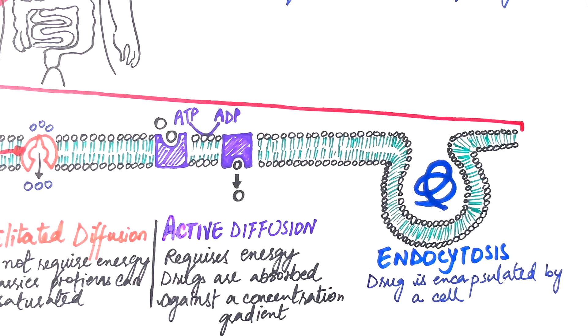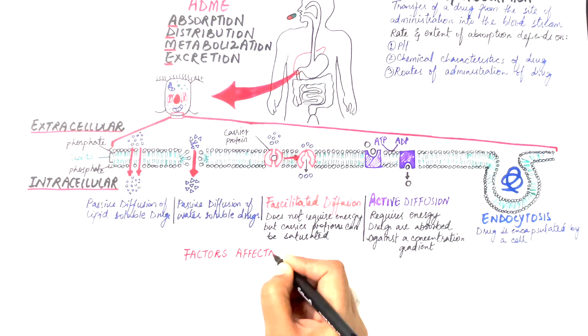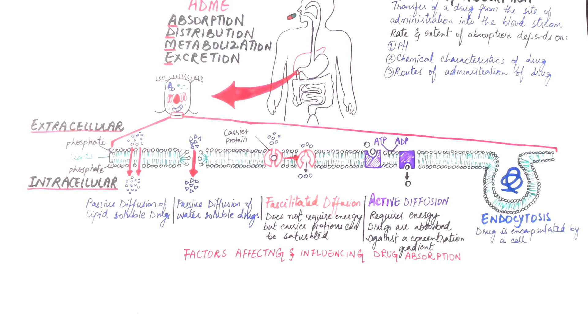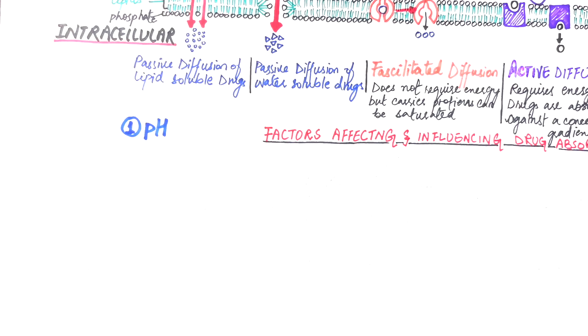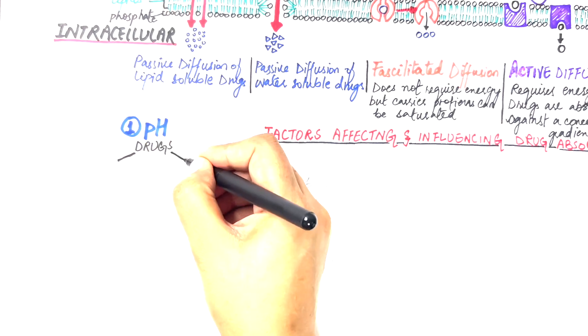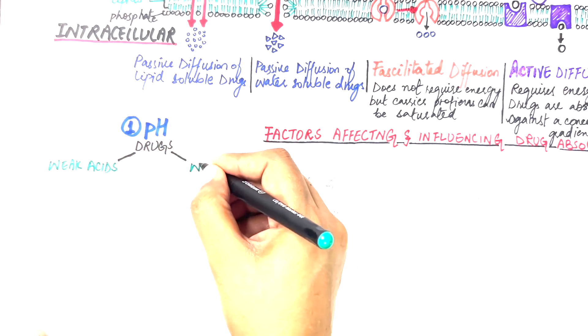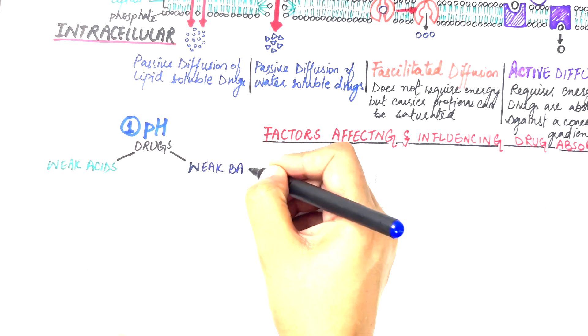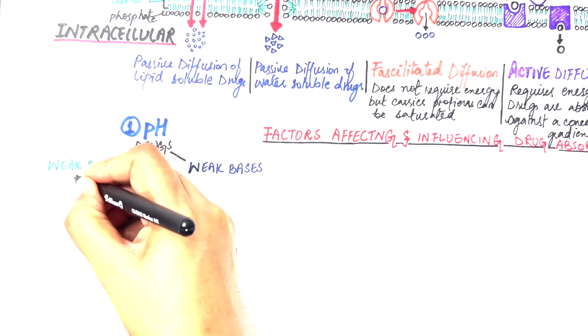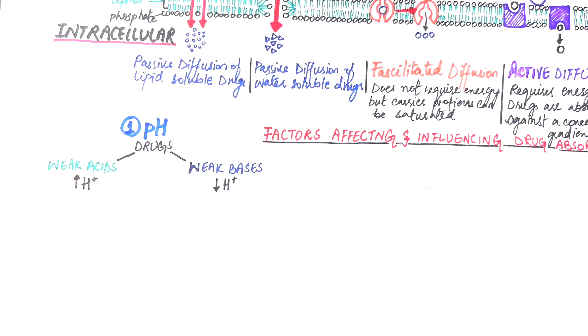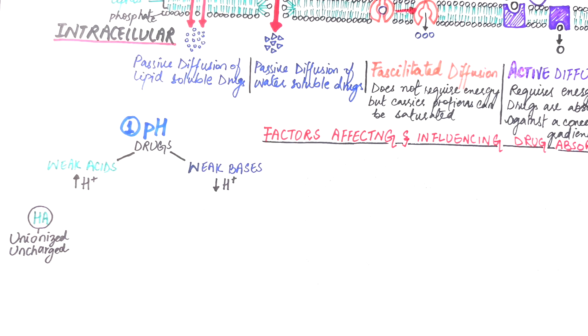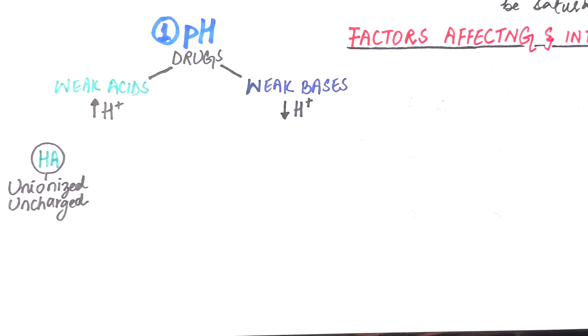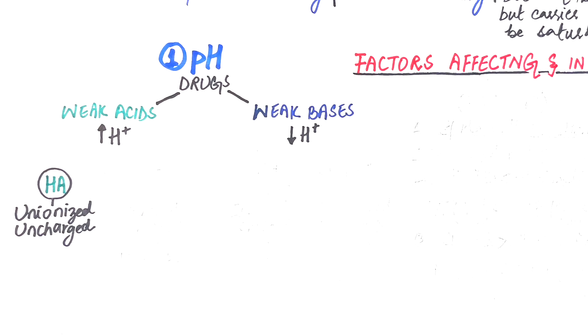Let's now look into some really important factors that can affect and influence drug absorption. The first factor which we will look into is the pH. Drugs are either in weak acids or in weak bases form. Now what are these weak acids or weak bases? Keep in mind that everything which is an acid will have more of hydrogen ions. However, weak bases will always come with a low concentration of hydrogen ions. A weak acid abbreviated as HA comes in unionized, non-polar, or uncharged form. This weak acid can dissociate and release a proton causing a charged ionized A minus to form.